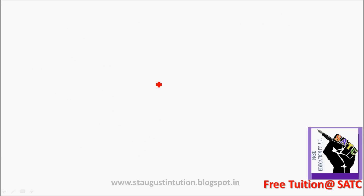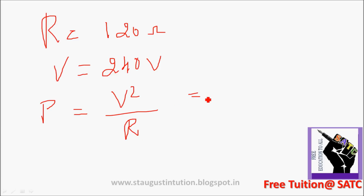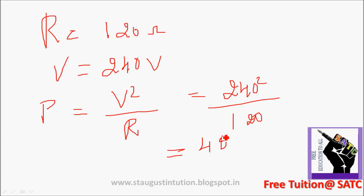Next problem: resistance is equal to 80 ohm, potential is equal to 80 V. Power is equal to V squared by R. This problem gives 40 squared by 120, which is equal to 480 V. Power is equal to heat.